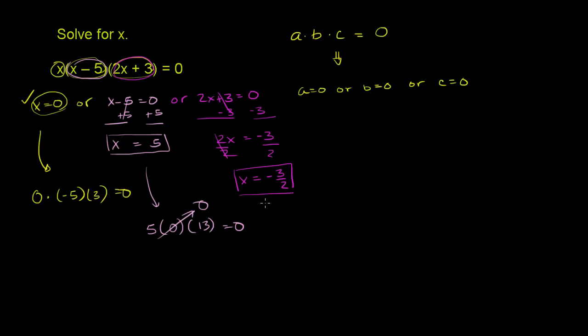And the last one. And you almost don't have to work it out because you know that when you evaluate x at negative 3 halves, it's going to make this last term 0. And when this last term is 0, it doesn't matter what these first two terms are. The whole thing is going to be 0. Well, let's just do it just for fun.